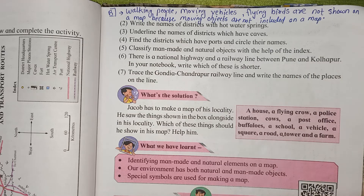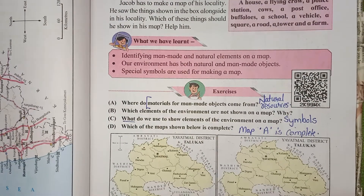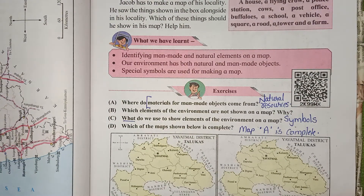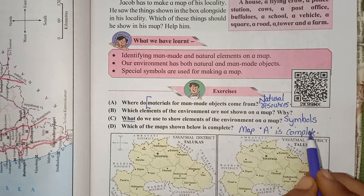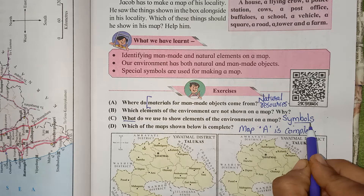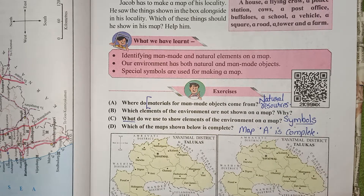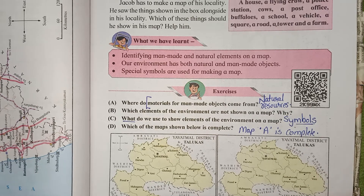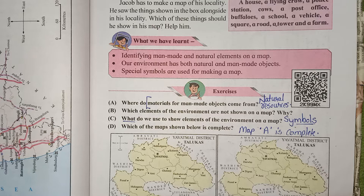Now we will see question C: What do we use to show elements of the environment on a map? The answer is symbols. So children, the right answer is that we use symbols to show elements of the environment on a map.